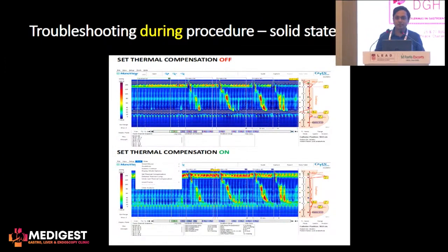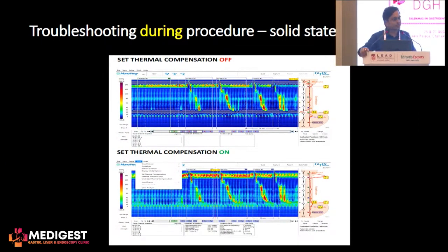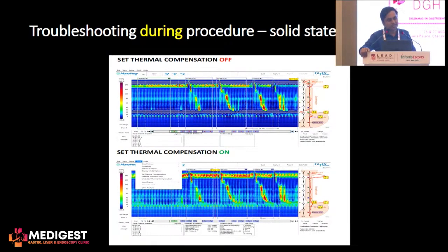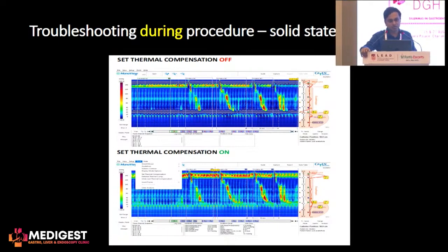With solid-state manometric catheters, though these are available at only very few centers, there is something called temperature drift. In these cases, there is an option to set thermal compensation, and you should make sure that thermal compensation is switched on when you are using a solid-state catheter.